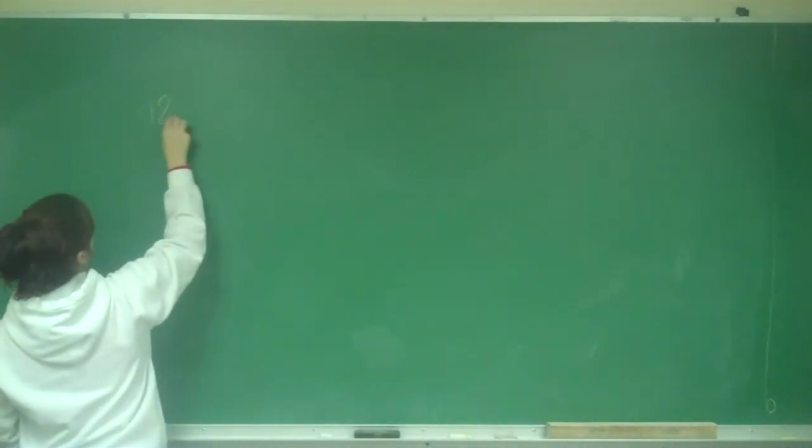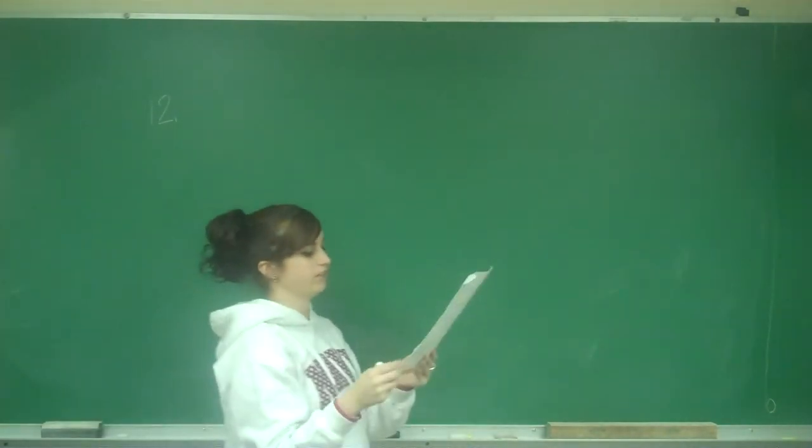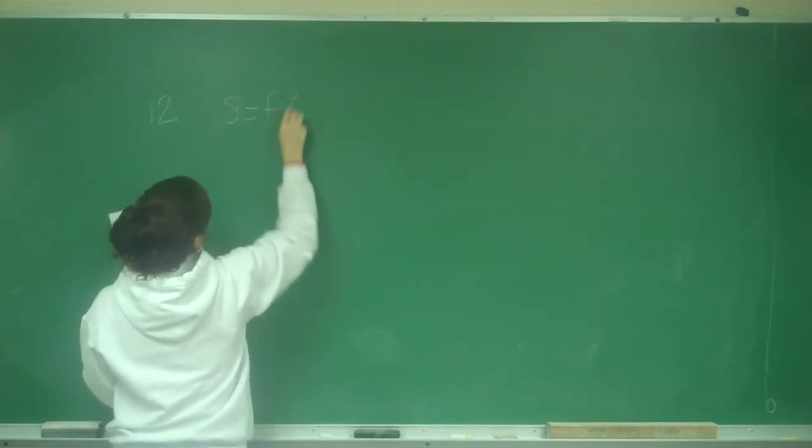I'm going to do number 12. So 12 says the position function for an object moving in a straight line is given by S equals F of T.